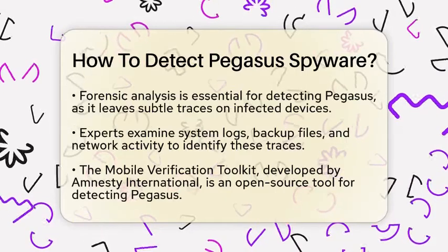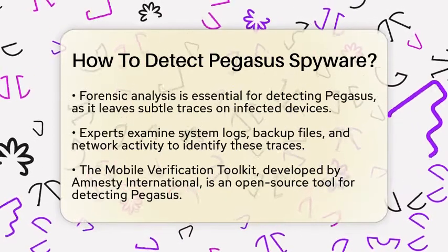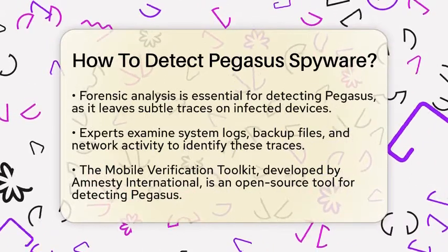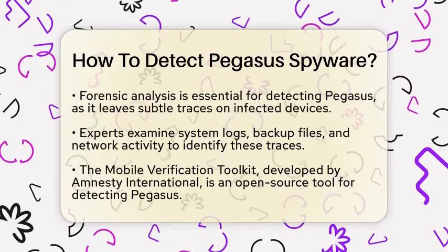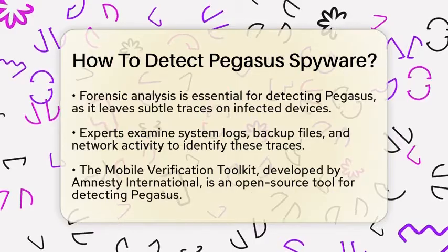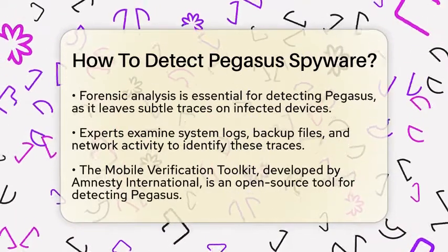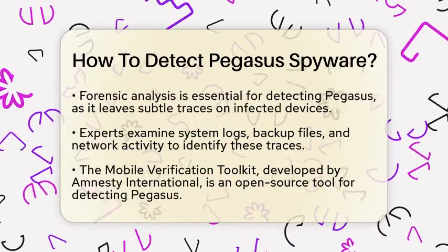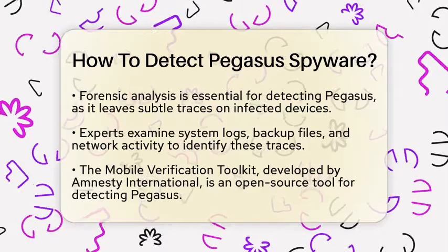Another useful tool is the Mobile Verification Toolkit, created by Amnesty International. This open-source tool helps detect Pegasus infections on both iOS and Android devices. It analyzes device backups for suspicious domain names and email addresses linked to Pegasus infrastructure. To use this toolkit, you first need to create an encrypted backup of your device, and then run the analysis on a secure computer.